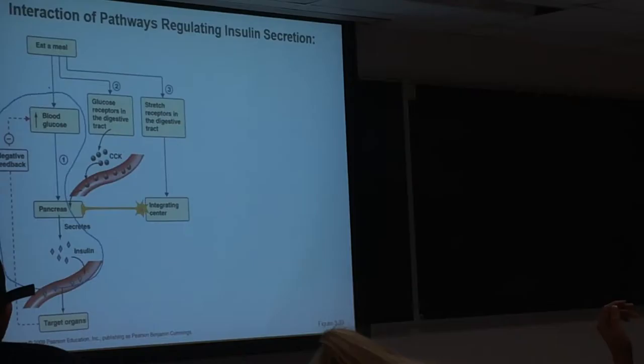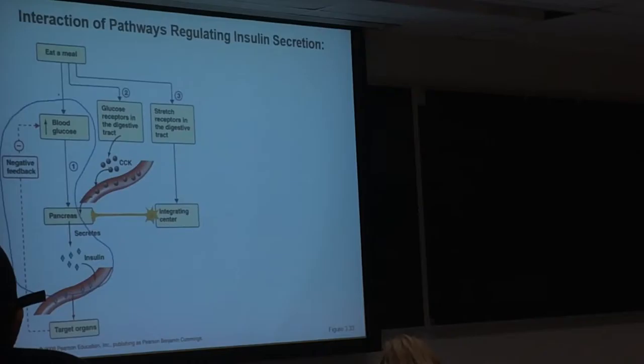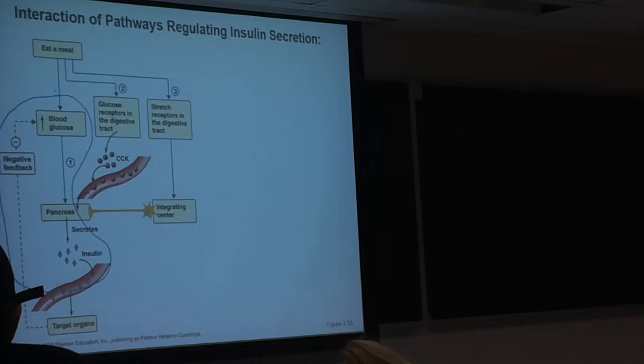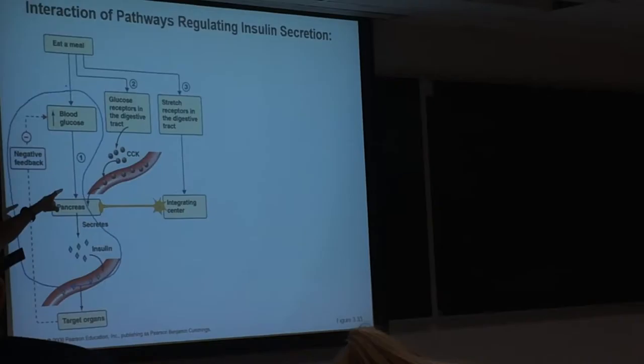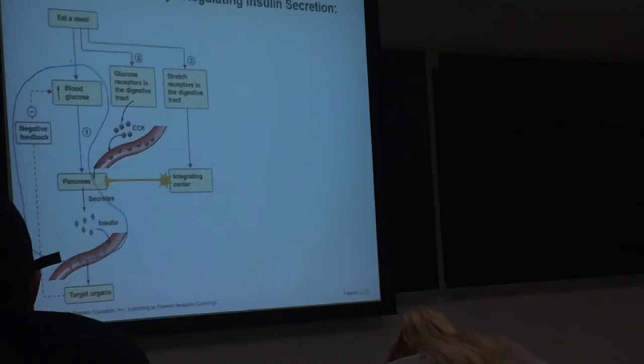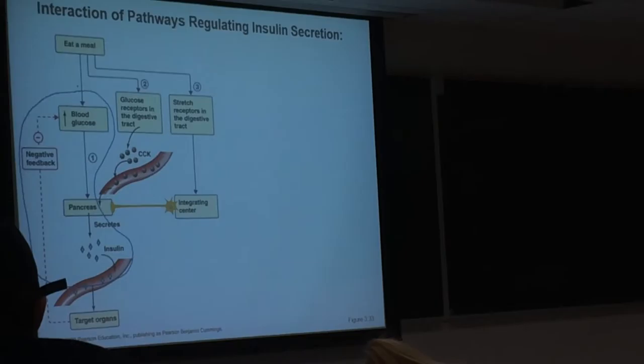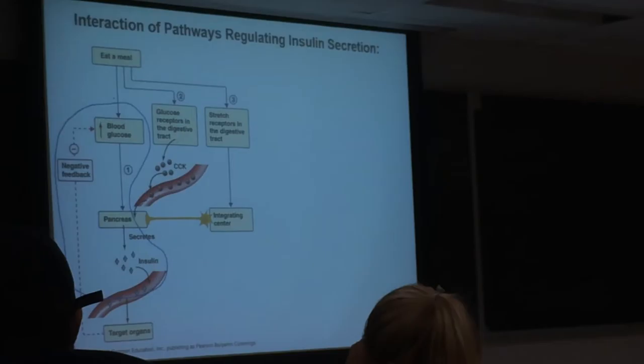The cholecystokinin transports by way of the blood to the pancreas, where it can turn on the beta cells, probably through some different pathway than we looked at previously. We know that ultimately the beta cells have to depolarize and that we have to have vesicular release of the hormone. So through some other mechanism — not the one triggered by glucose metabolism — calcium comes into the cell and we get the release of insulin. That's a kind of locally acting hormonal pathway.